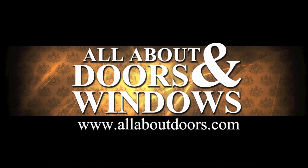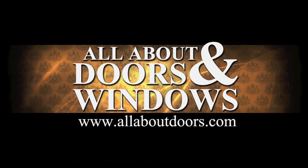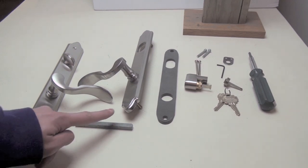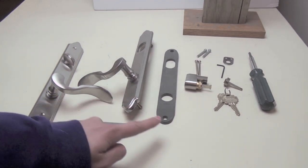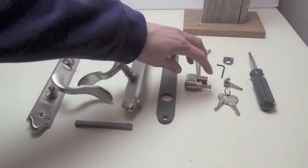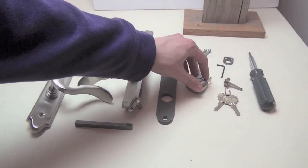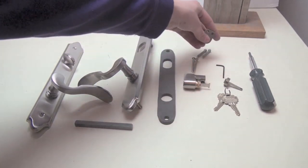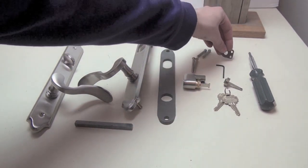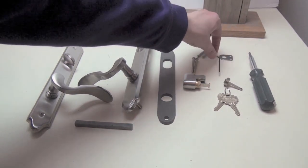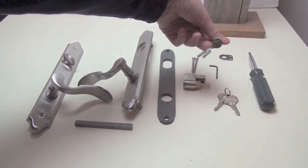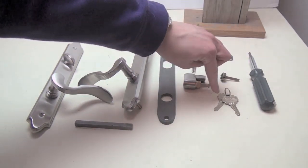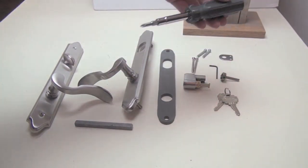This is a video on how to install handles on an Andersen multipoint Mac. Your handles should come with interior trim, a spindle, exterior trim, a foam handle insulator, cylinder, installation hardware and screws, a limiting plate, a hex wrench, lock actuator, keys, and you'll need a Phillips screwdriver.